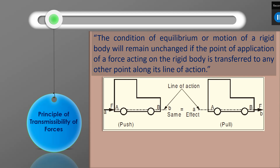Let us consider a small body. On this body we are applying a force F at a point A, and A is along the line of action of this force. Consider the same body where we are applying the same force with magnitude F at a point P, and the line of action remains unchanged. According to the principle of transmissibility of forces, the conditions of equilibrium remain unchanged if the force F acts at any point on this line of action.